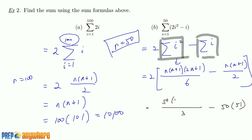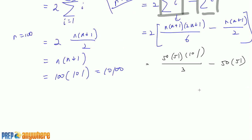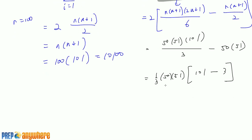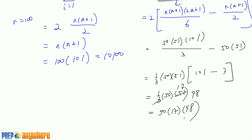That gives you 50 · 51 · 101. You can factor it: you get (1/3) · 50 · 51 · 101 minus 3, and after reducing you get 50 times 17 times 98. That's what you get — punch it into the calculator.